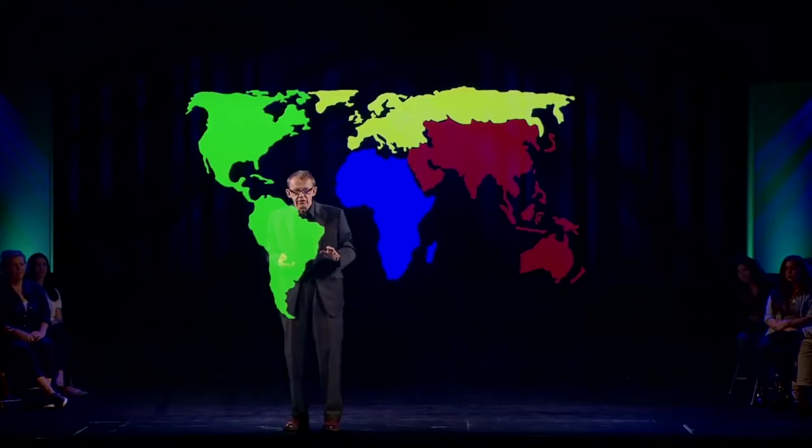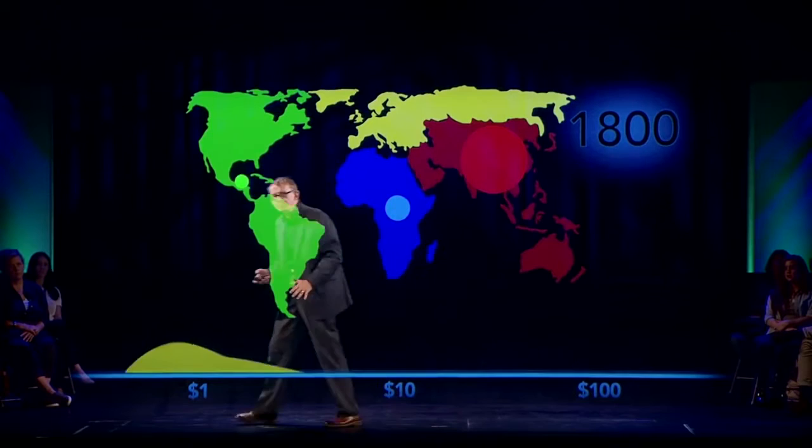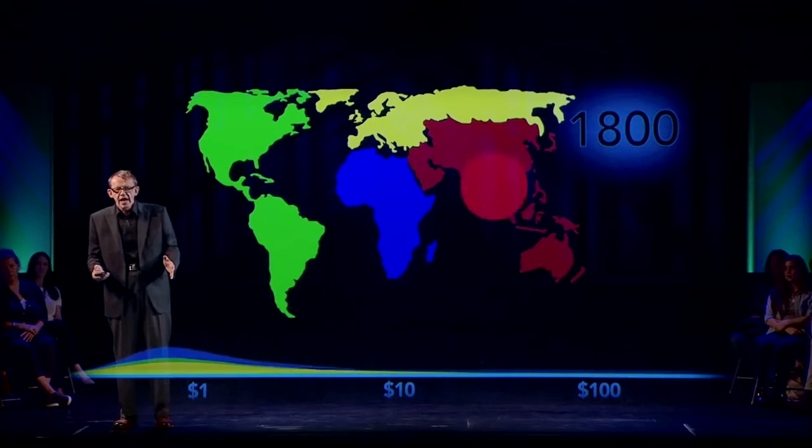I'm going to show you where extreme poverty has been and how it has decreased. This is the world, and here are the populations back in 1800 in each of the regions — in total, 1 billion. Here is the joystick of income, and I'm going to put down these people to show their incomes. First, Europe, and they spread out here.